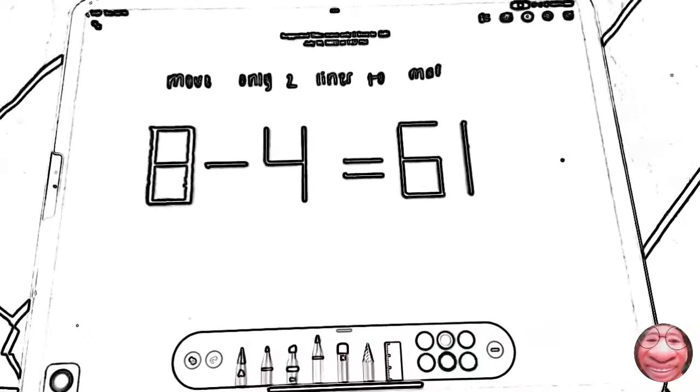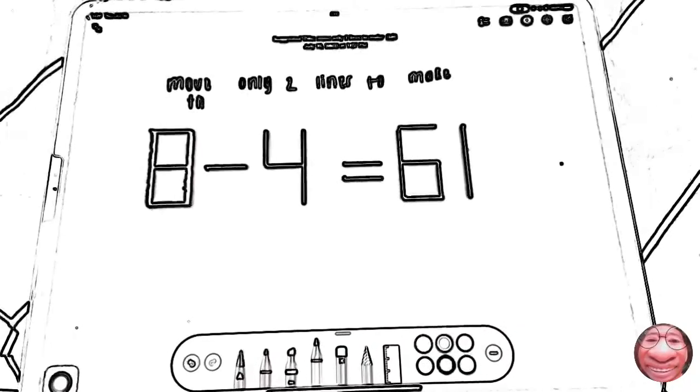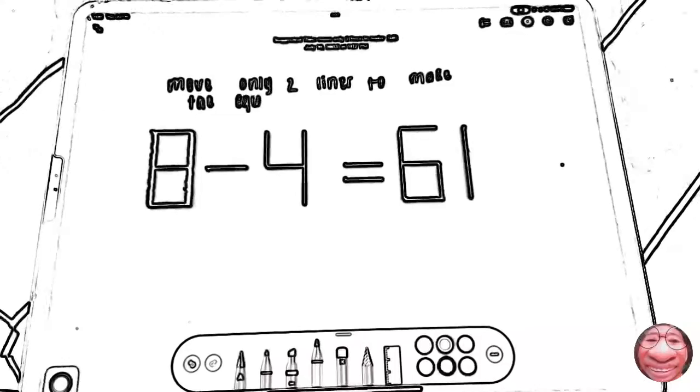Our first puzzle is the line numbers. You must only move two lines to make the equation correct.